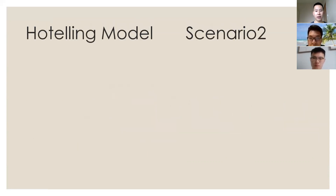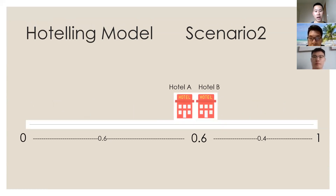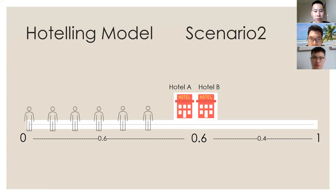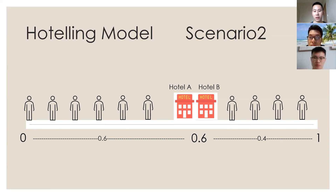Let's look at another scenario. Hotel A and hotel B are located at the same spot on the street, which is 0.6. In this scenario, customers are uniformly distributed. So 60% of customers will go to hotel A, and only 40% of customers will go to hotel B, as hotel B is close to those customers.